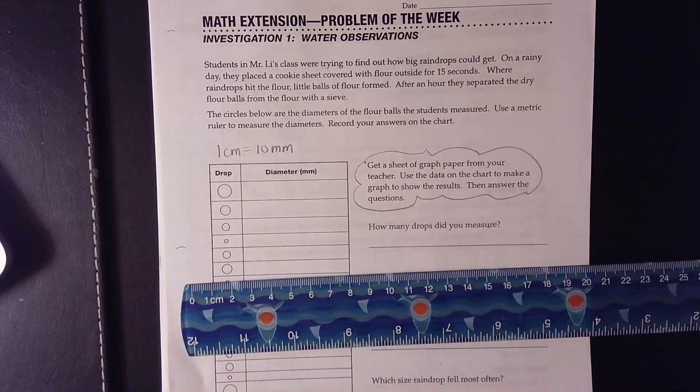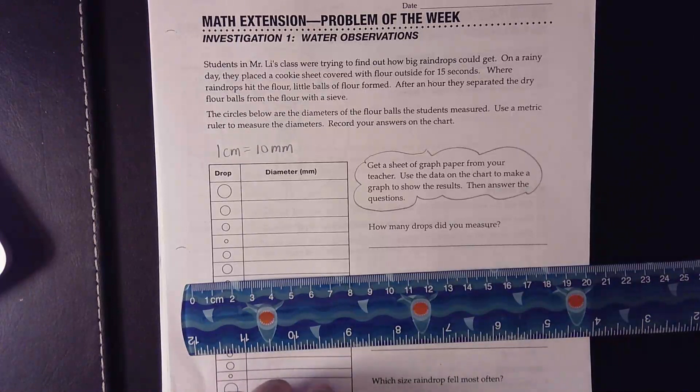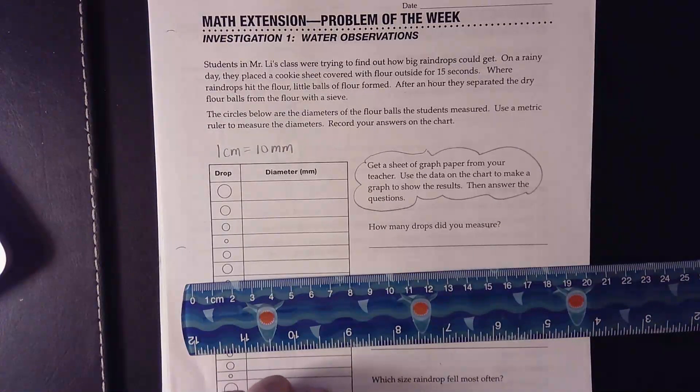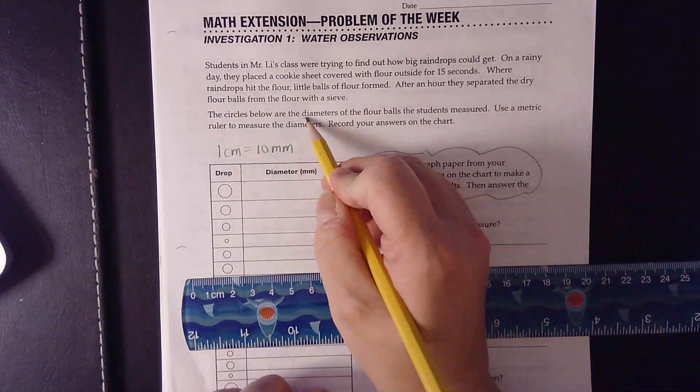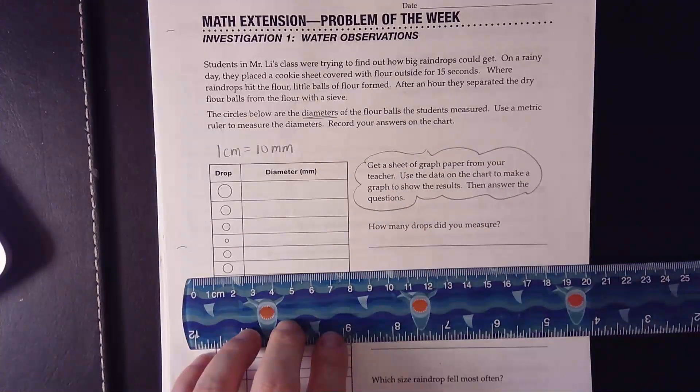Students in Mr. Lee's class were trying to find out how big raindrops could get. The key word here is diameter. And we did talk about the diameter when we did our Earth Materials Rocks and Minerals unit.